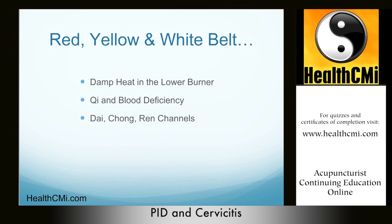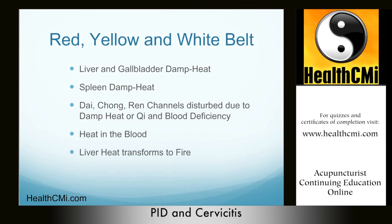Regarding leucorrhea: red, yellow, and white belt leucorrhea are present when there is a disruption of the dai, chung, and ren channels due to damp heat in the lower burner or qi and blood deficiency. White belt leucorrhea is characterized by white or clear vaginal discharge without odor and involves spleen qi or kidney yang deficiency with excess dampness. Yellow belt leucorrhea has a foul odor and involves spleen damp heat or liver and gallbladder damp heat. Red belt leucorrhea involves blood in the vaginal discharge and involves heat in the blood or liver heat changing into fire.